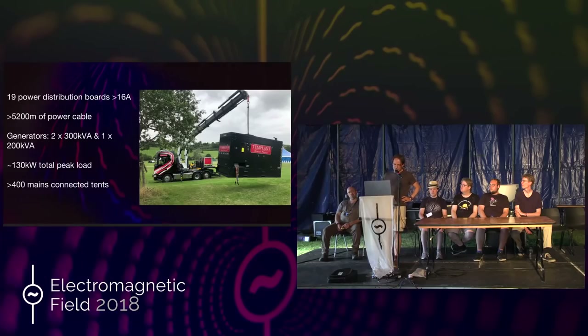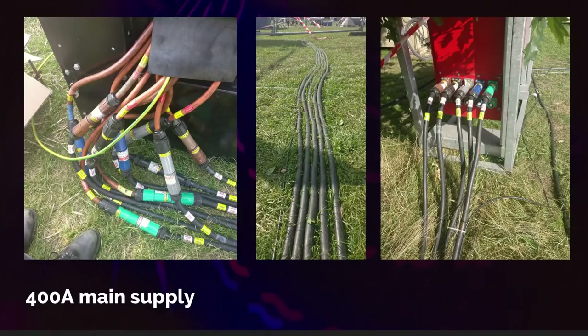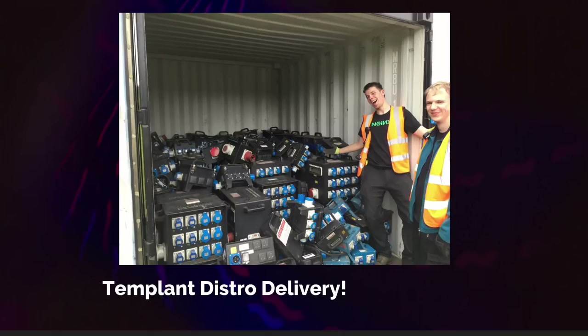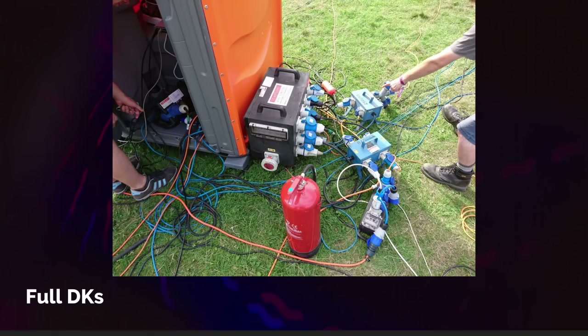Somebody went round and counted all the people plugged in — apparently there's more than 400. This is the main supply from one of the generators with 400 amp cables going away from it. There's a container full of all the power distribution — several tons of it. We did a bit of aerial power rigging with some very heavy cable, which was a little wobbly but didn't fall down, which is good. There's a small sample of the 400 connections plugged in, and a fire extinguisher because safety first.